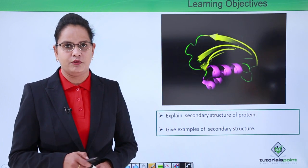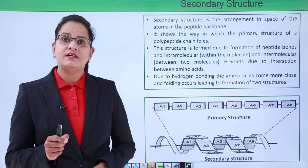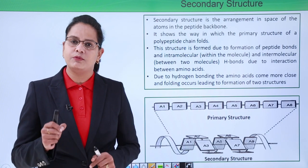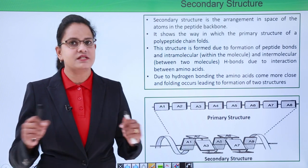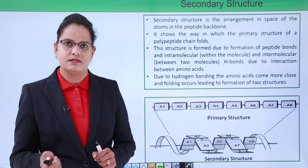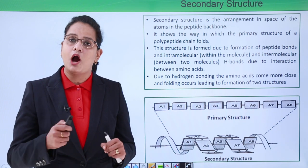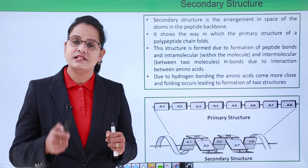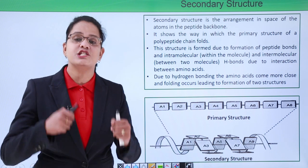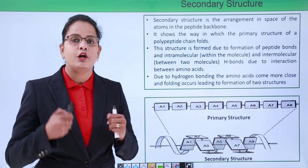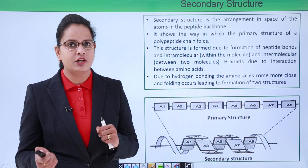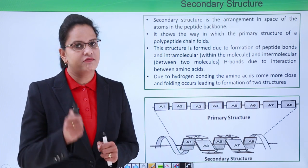We learned that the primary structure of the protein was just a linear sequence of amino acids. Now, how this linear sequence of amino acids gets folded to form the secondary structure is what we will learn.